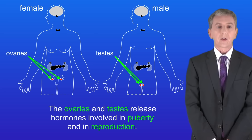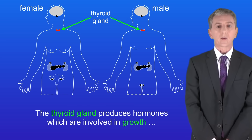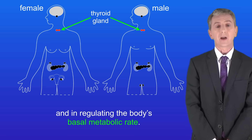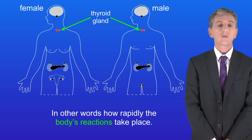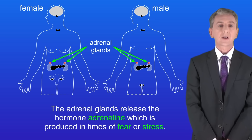The ovaries and the testes release hormones involved in puberty and in reproduction. The thyroid gland produces hormones which are involved in growth and in regulating the body's basal metabolic rate — in other words how rapidly the body's reactions take place. The adrenal glands release the hormone adrenaline, which is produced in times of fear or stress.